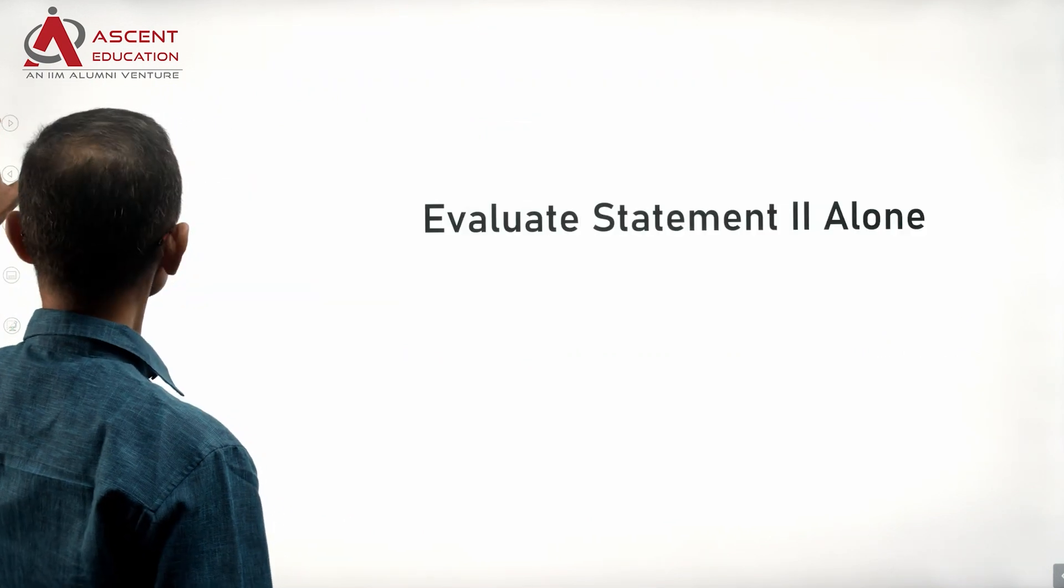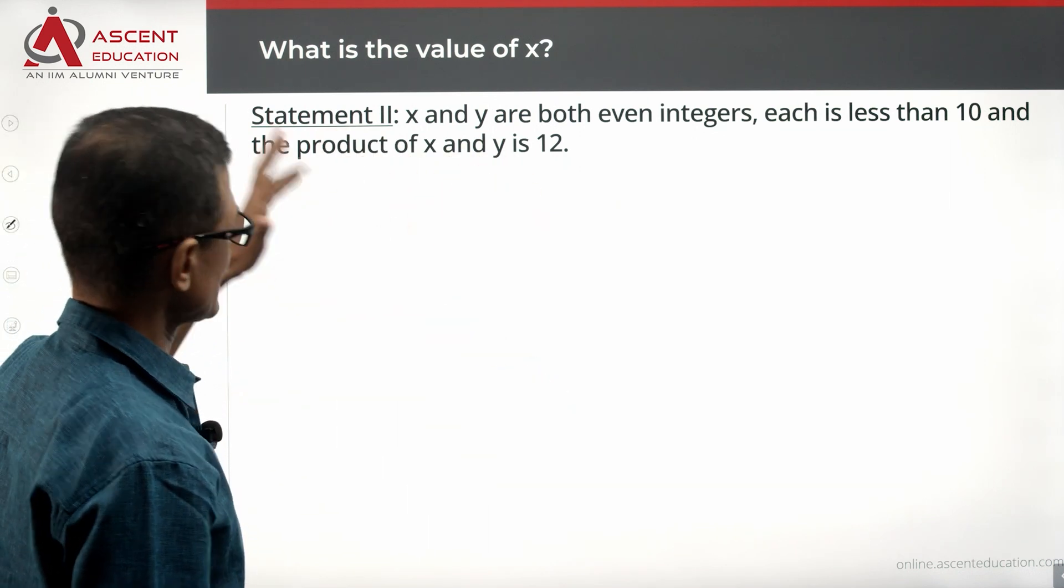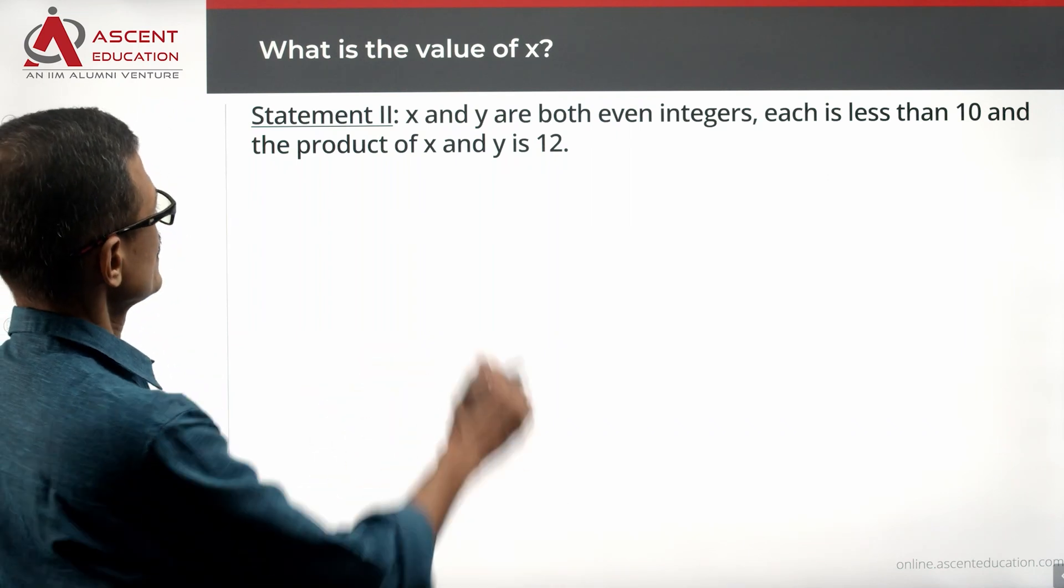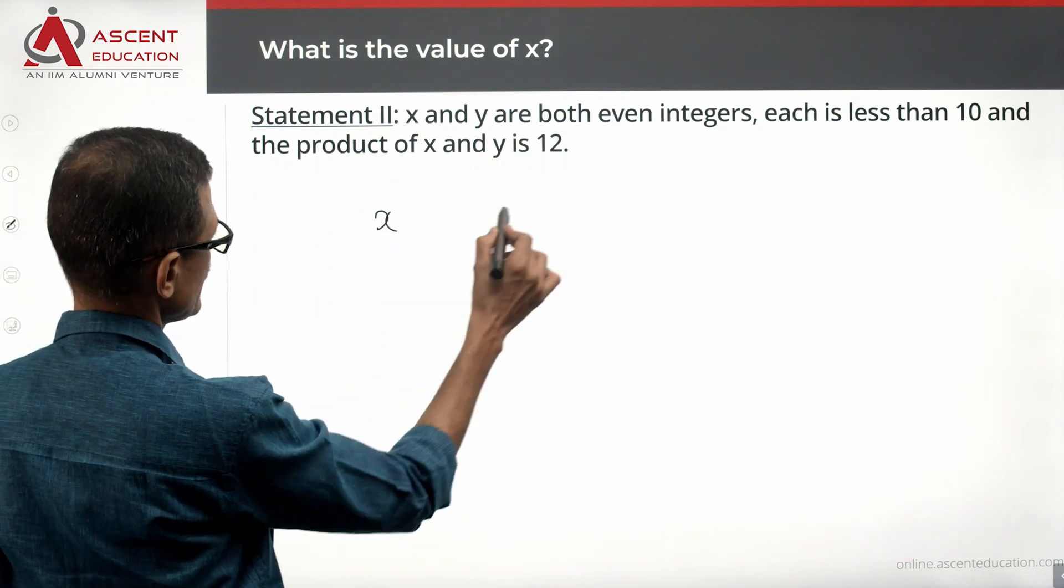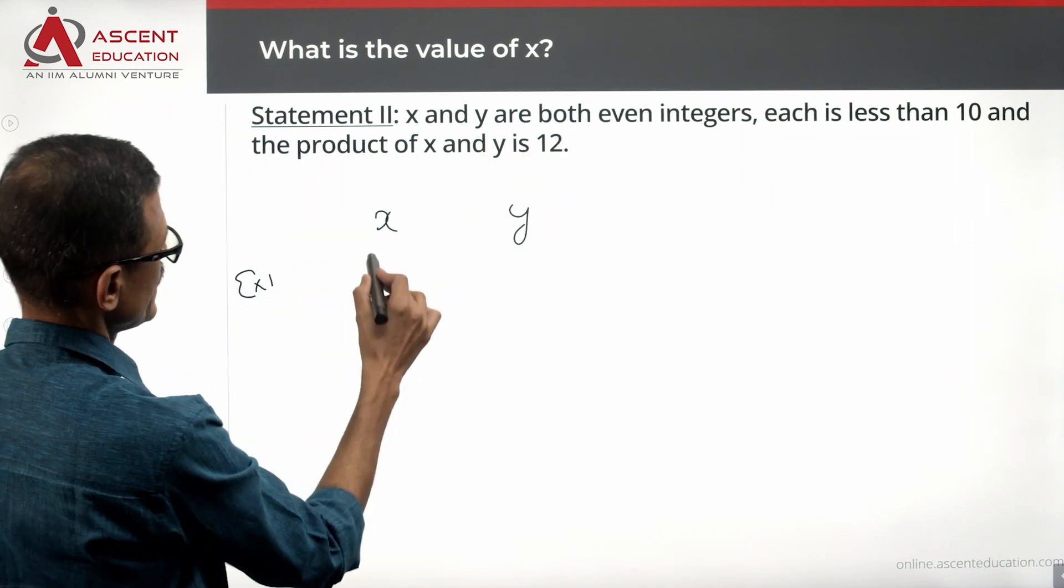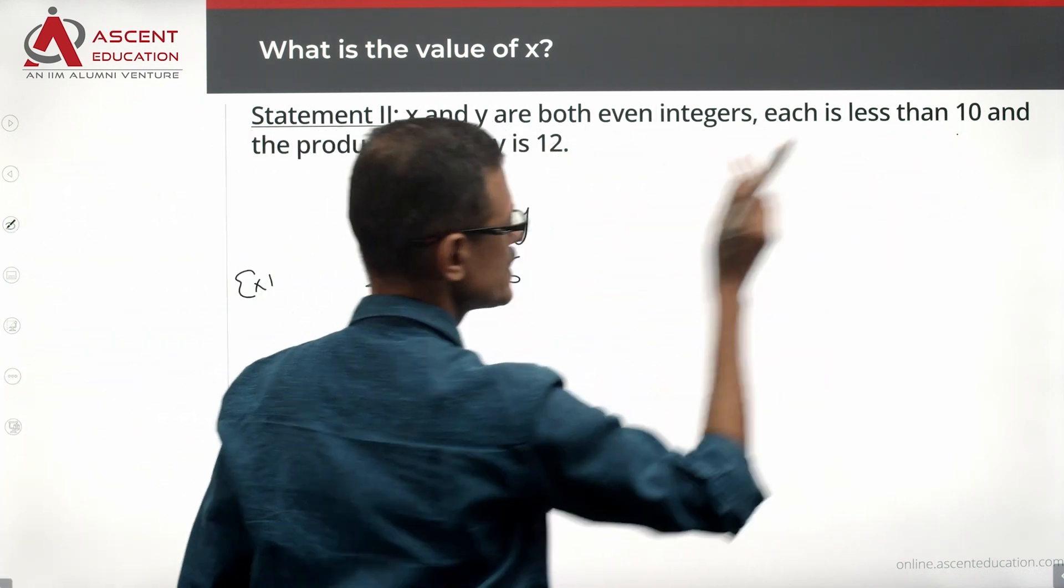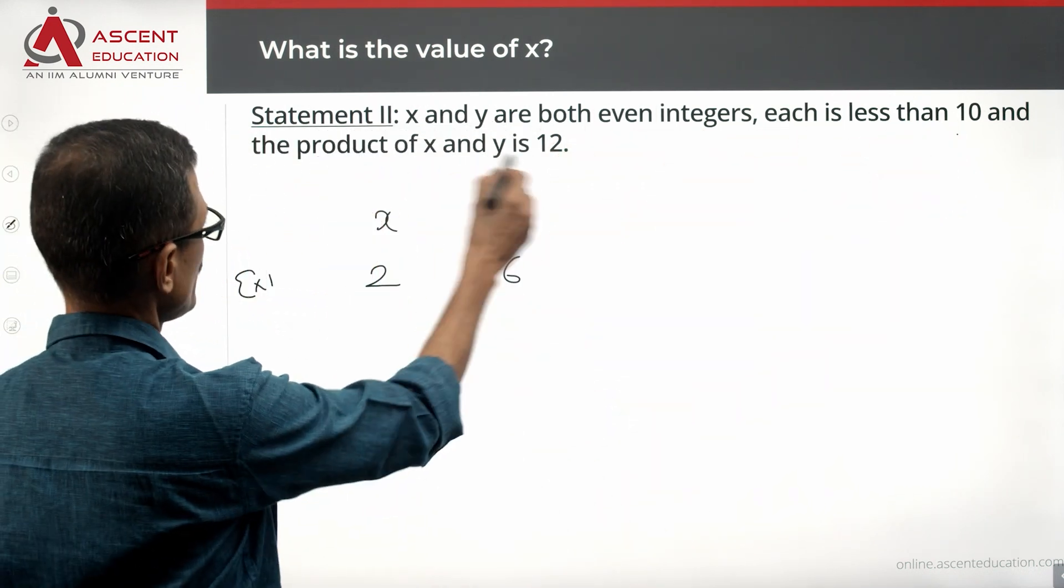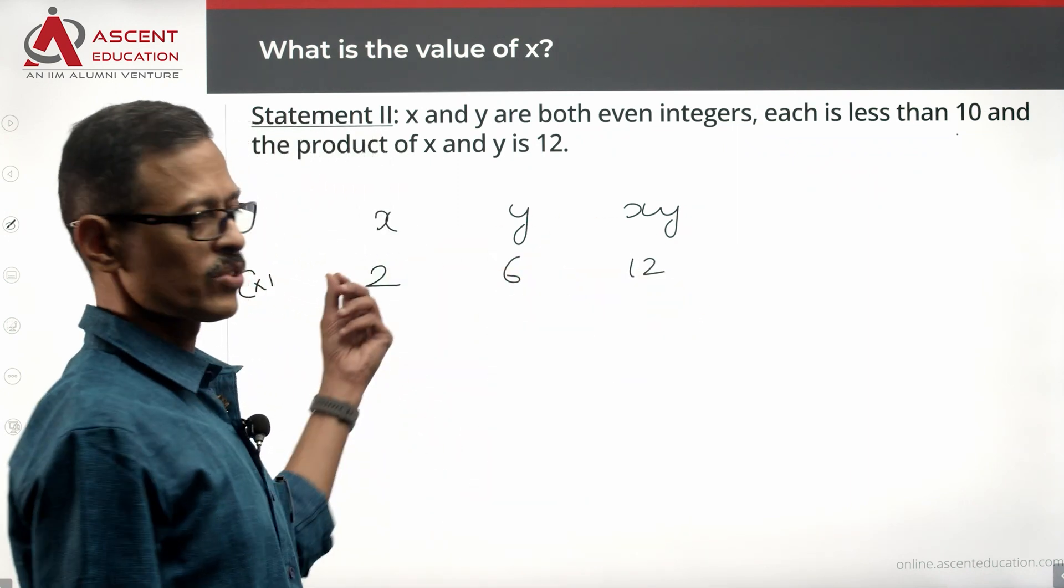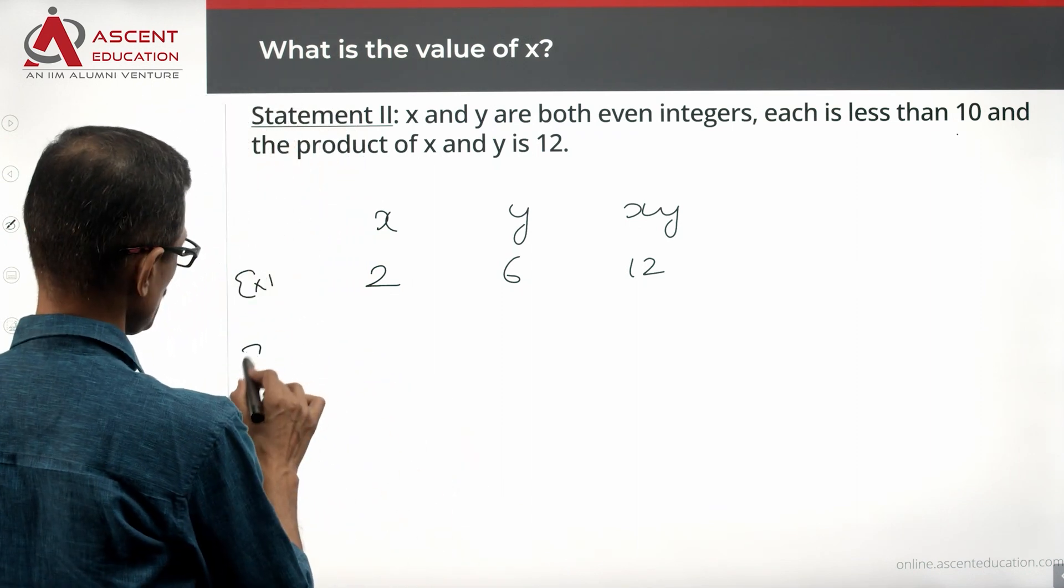Look at statement 2. X and Y are both even integers, wonderful. Each is less than 10 and the product of X and Y is 12. Okay, counter example again. X is 2, Y is 6. Are both of them less than 10? Yes. Each is less than 10. Is the product X times Y equal to 12? Wonderful, right?